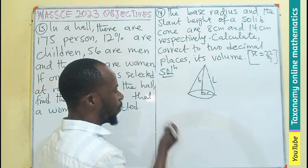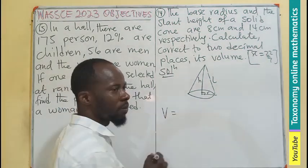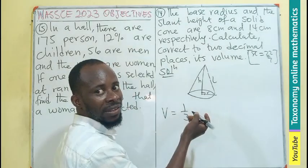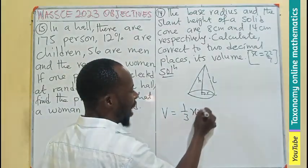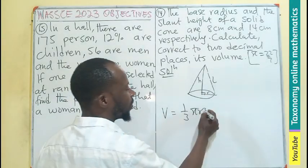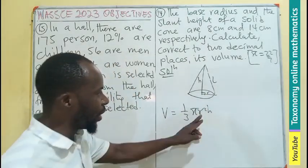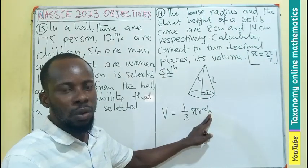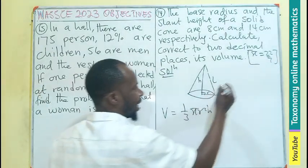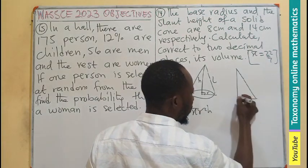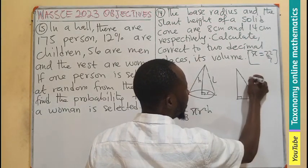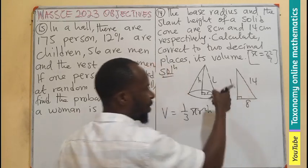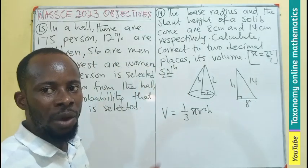To find the volume, the volume of a cone, which is a pyramid, is one-third the base area, which is πr², times the height. We need the radius, which the question has given us. We need the height, which we don't know. So from the triangle, L is given as 14, radius as 8. I can find the height using Pythagoras theorem.